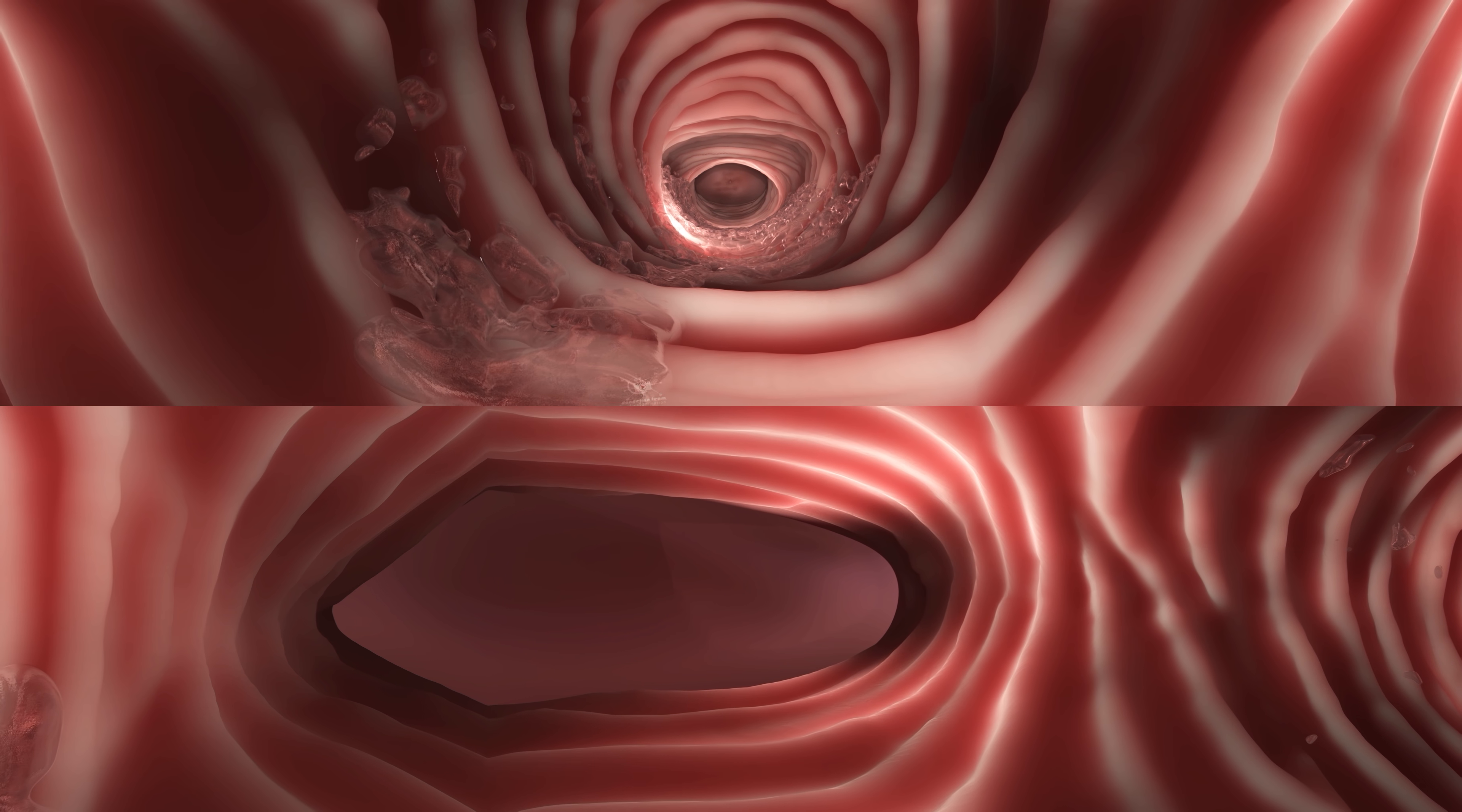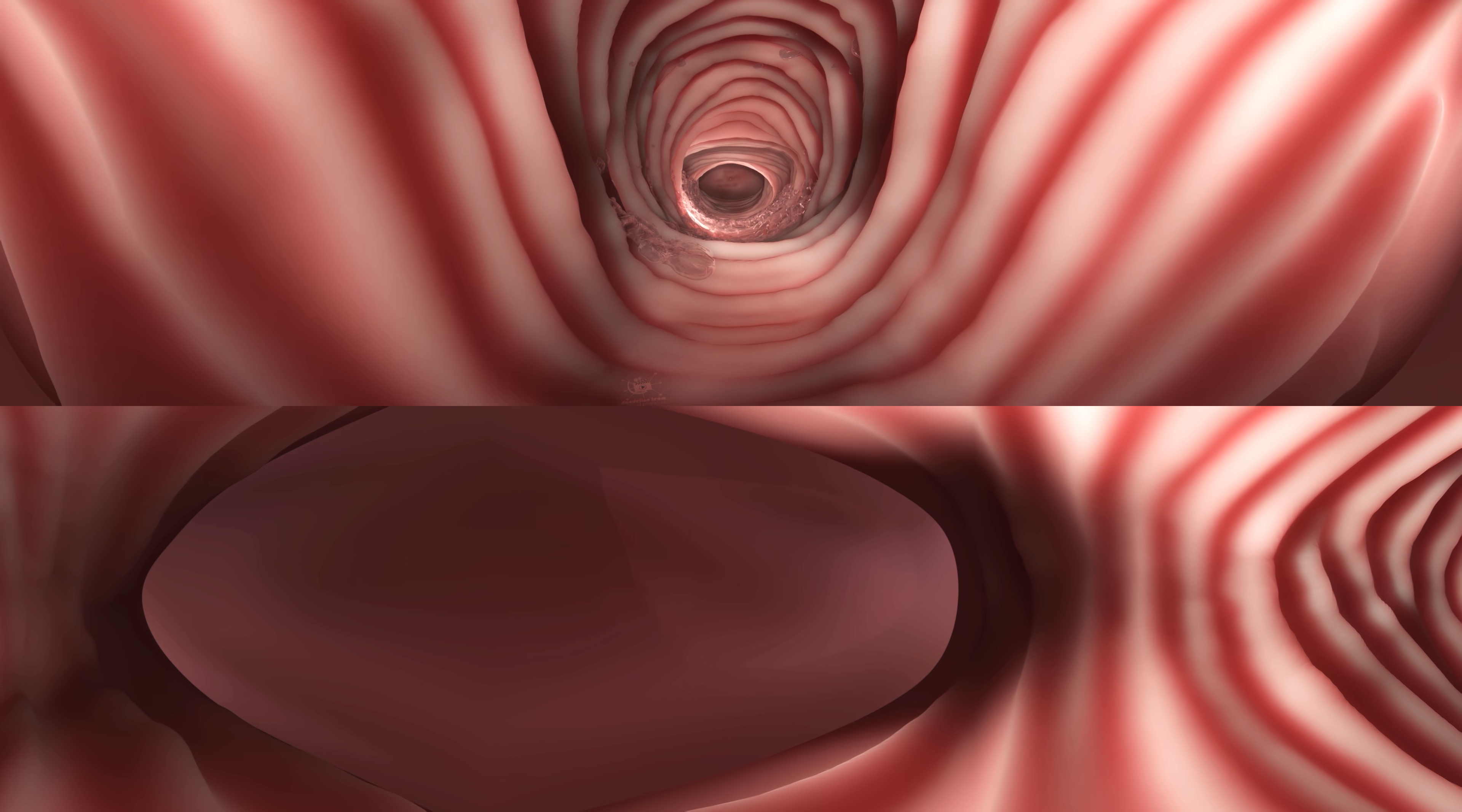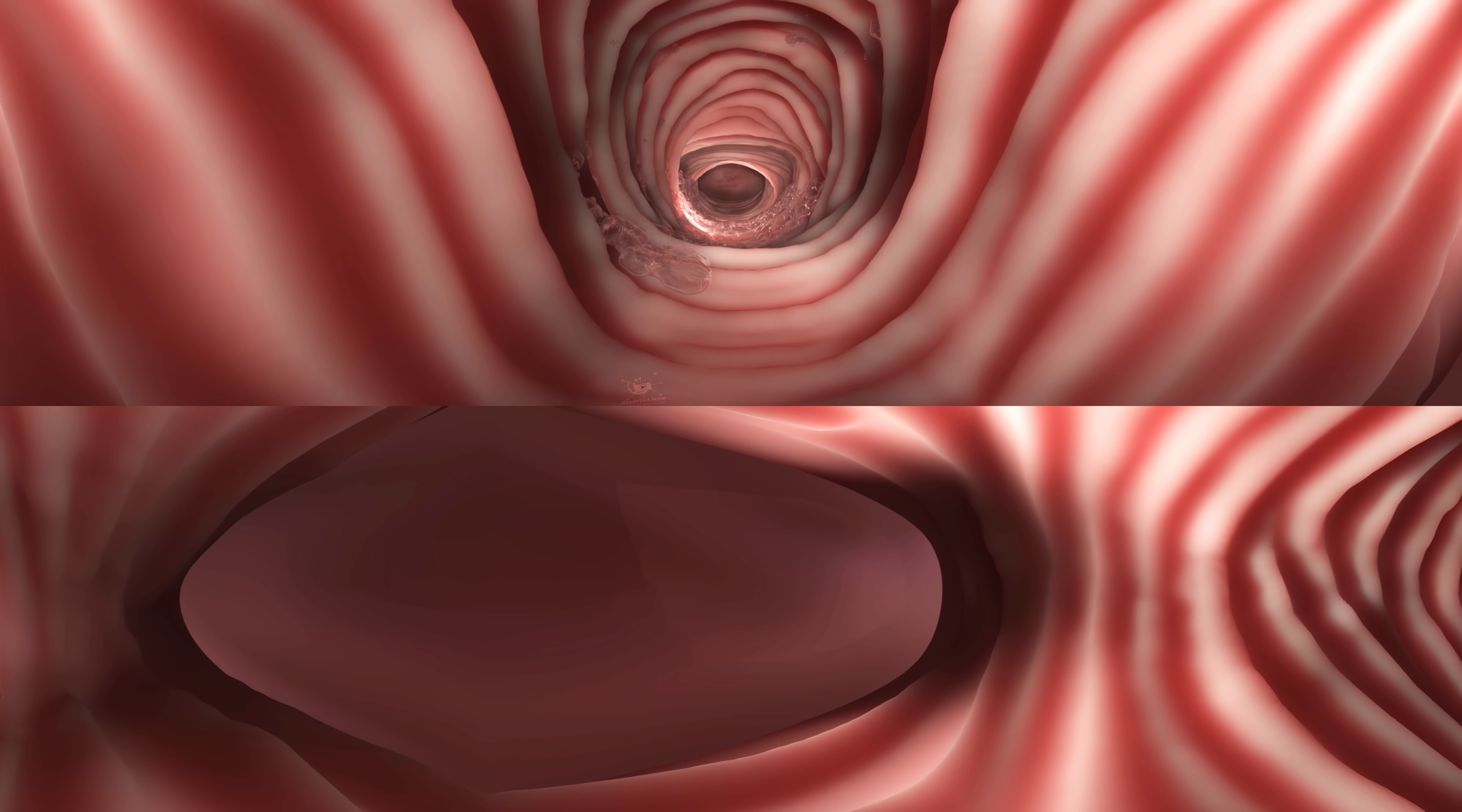With age, the production of estrogen decreases, which can lead to a thinning of the vaginal walls and a loss of vaginal rugae. This can make the vagina feel less elastic and more sensitive to pain.